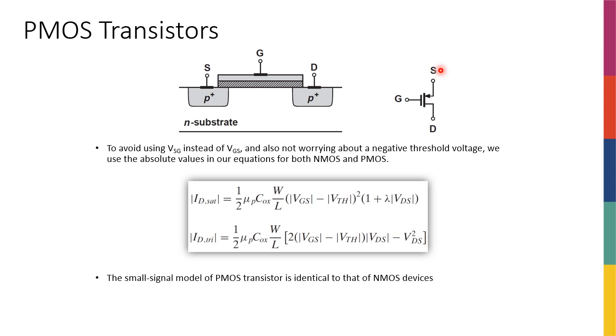Similar to BJT where we cared about V-emitter base, here we care about V-source gate, not gate source. We're going to be dealing with this V-source gate, and basically, the threshold voltage this time is going to be a negative value.